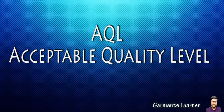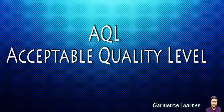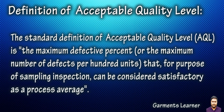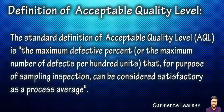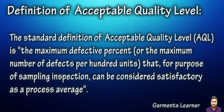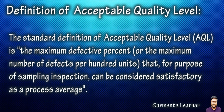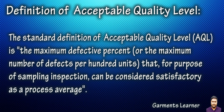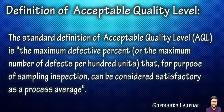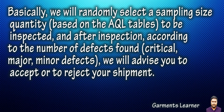Today I will discuss AQL, which stands for Acceptable Quality Level. The standard definition of AQL is the maximum defective percentage, or the maximum number of defects per hundred units, that for the purpose of sampling inspection can be considered satisfactory as a process average. Basically, we will randomly select a sample quantity based on the AQL table to be inspected.